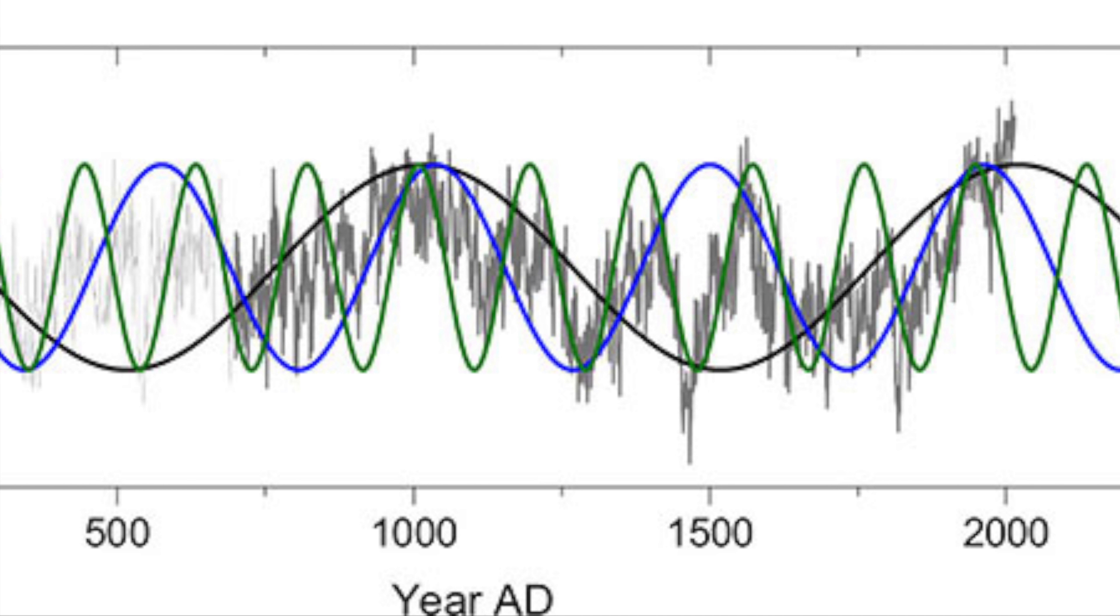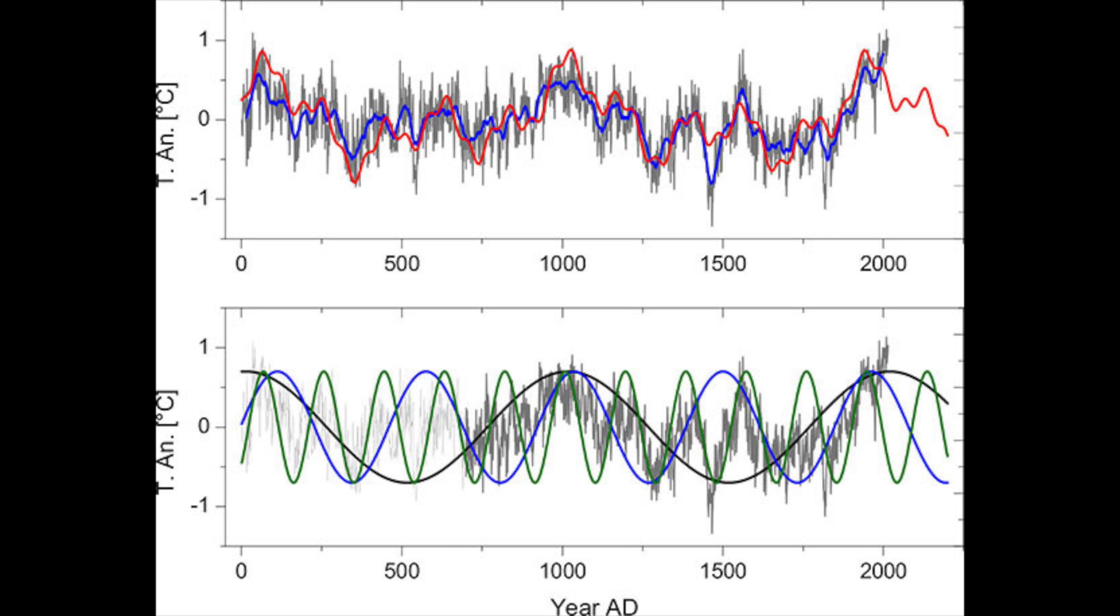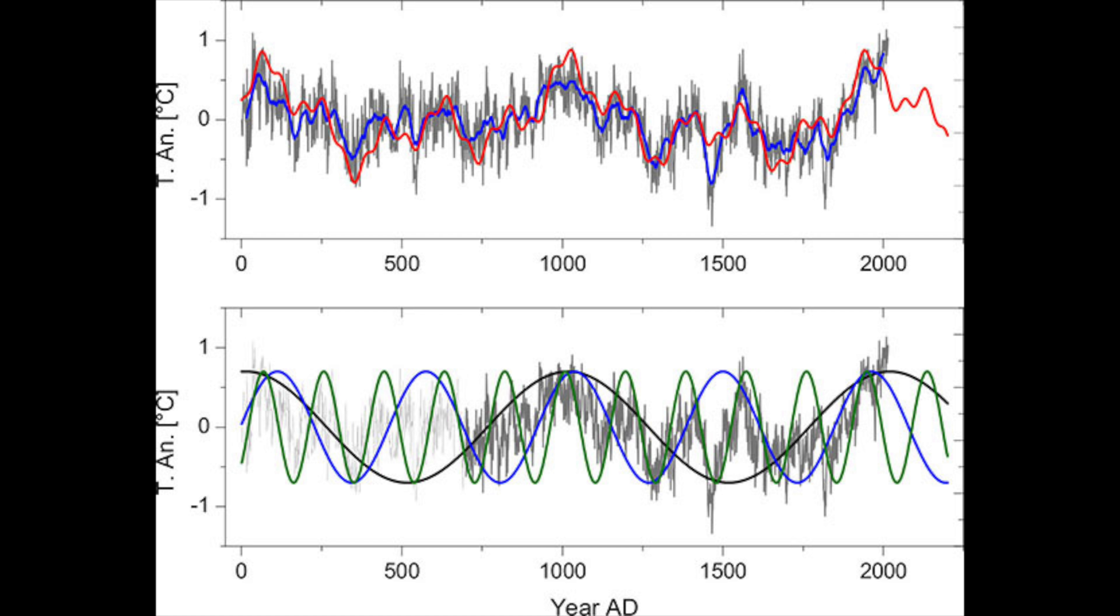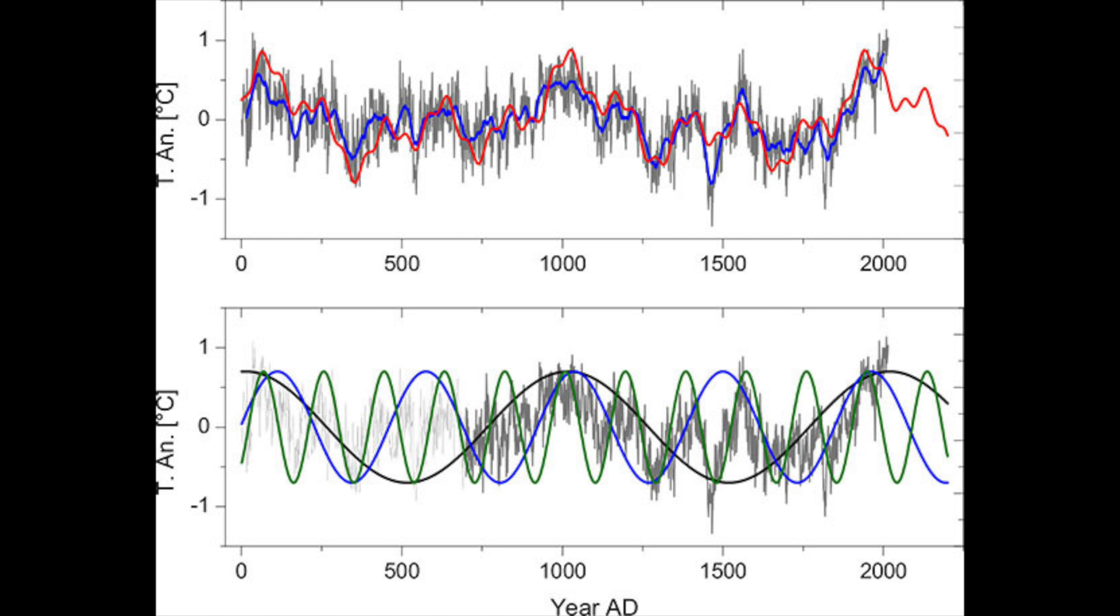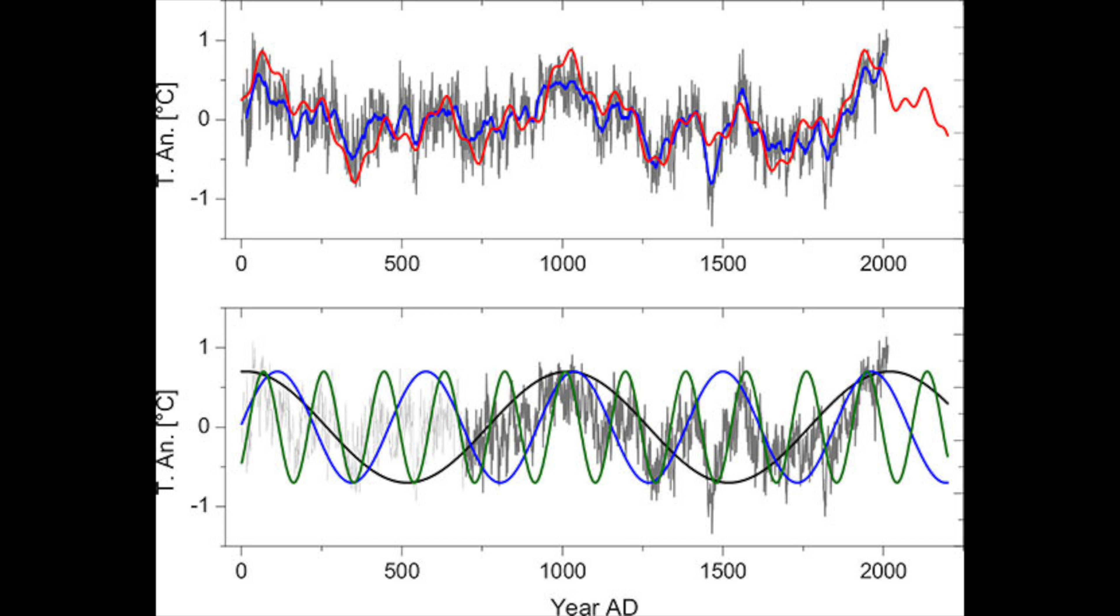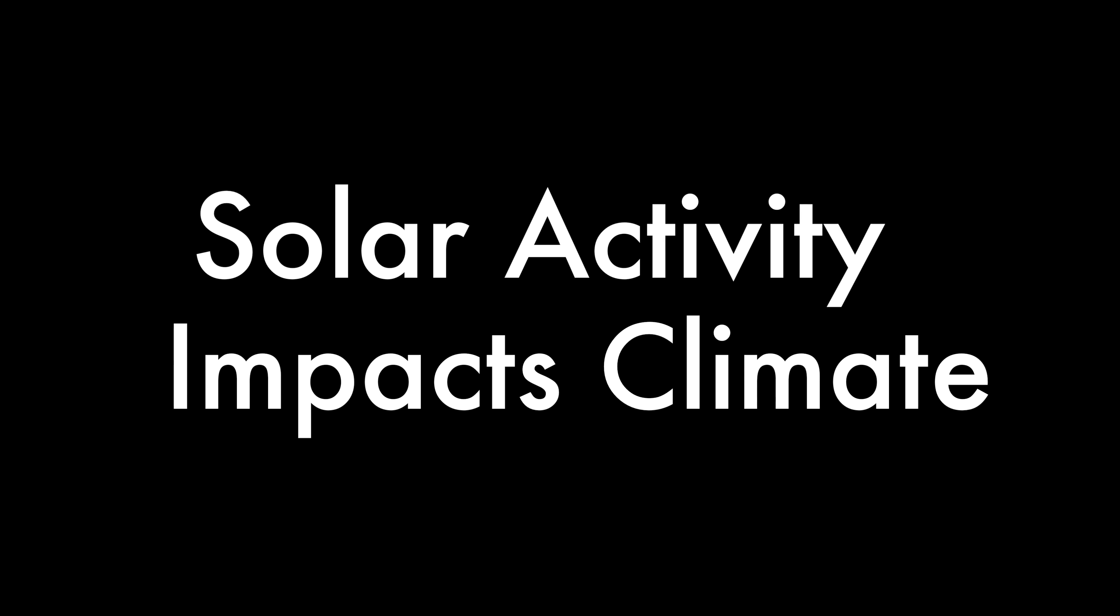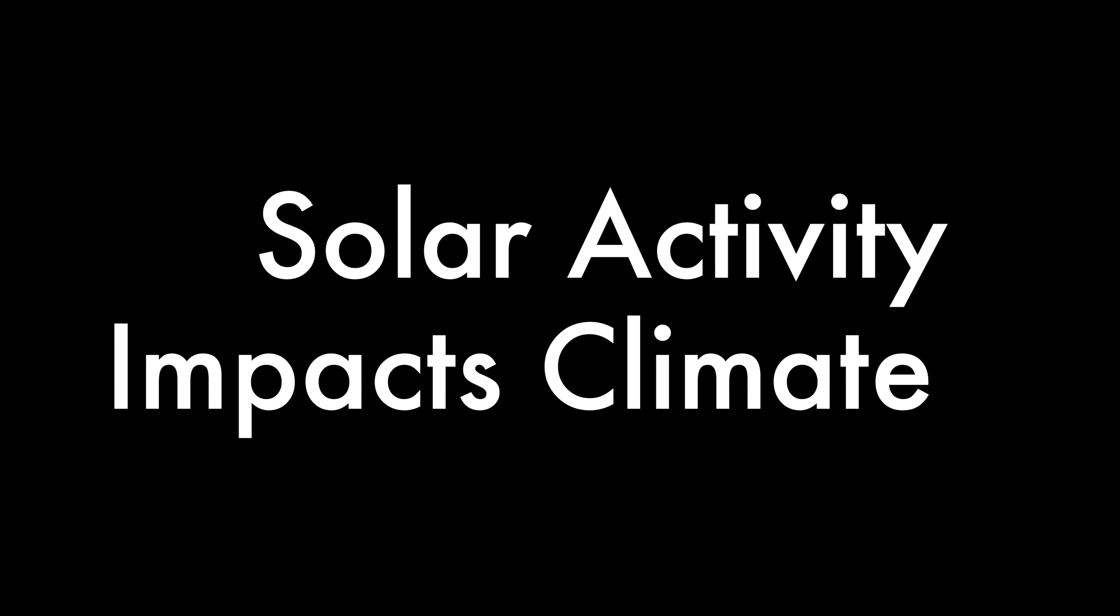It can be expected that the periodicity of G7 lasting 2,000 years so far will persist also for the foreseeable future. It predicts a temperature drop from present to AD 2050, a slight rise from 2050 to 2130, and a further drop from AD 2130 to 2200.